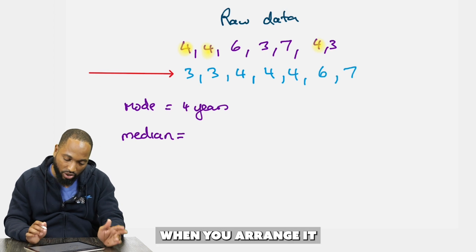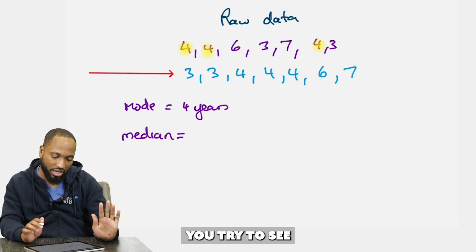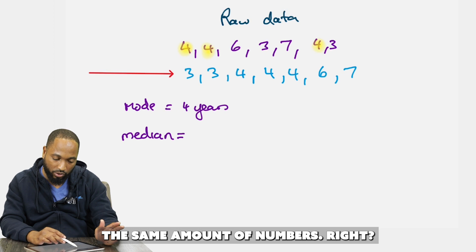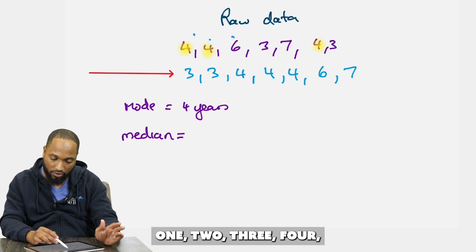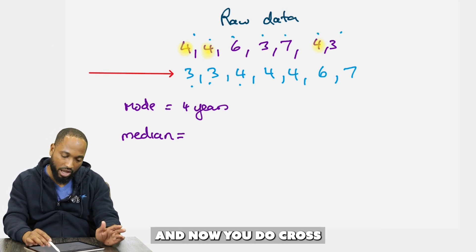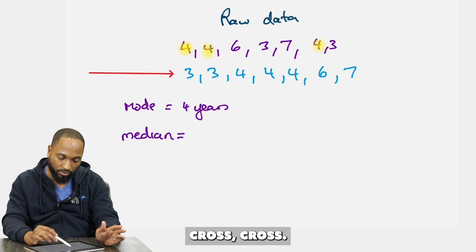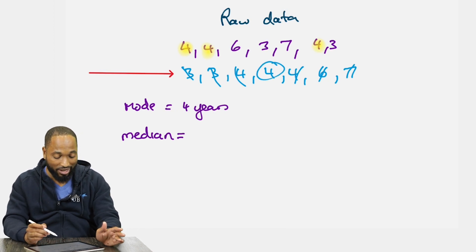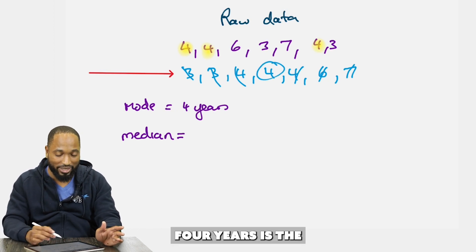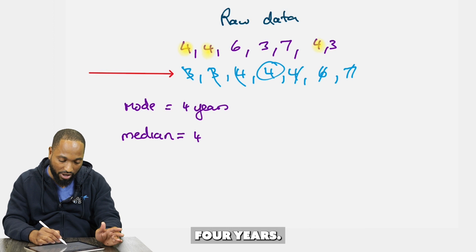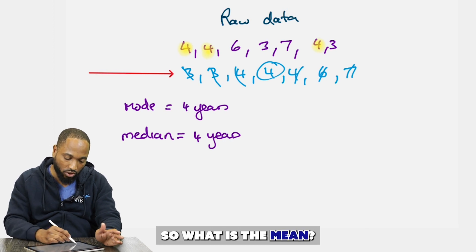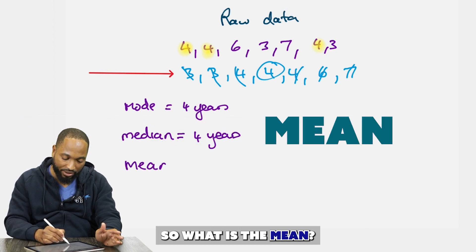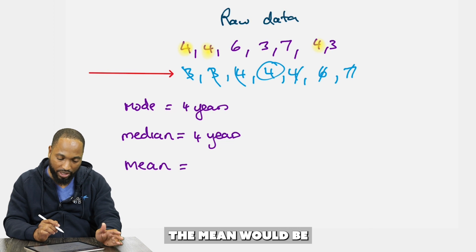When arranged in order: 3, 3, 4, 4, 4, 6, 7. You have seven numbers — cross out from each end until you reach the middle. The number in the middle is 4. So the median is also 4 years.